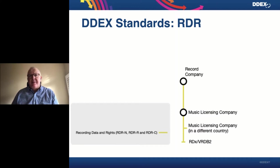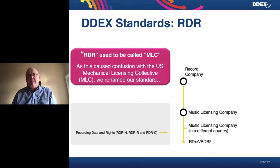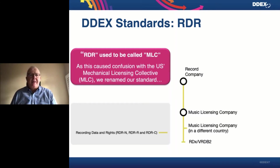Our focus today is the RDR standards, which is communication primarily between record companies, music licensing companies, and amongst themselves in different countries. Quite importantly, there are two particular projects within the administration of record company producer and performer rights: RDX and VRDB2 — centralized projects intended to improve the quality of data, improve efficiency, and the ability for collective rights organizations to get the money to the right person or company. The standards we're talking about today used to be called the Music Licensing Company standards, another MLC, so last year to avoid ongoing confusion we changed the name to RDR.